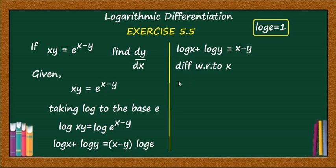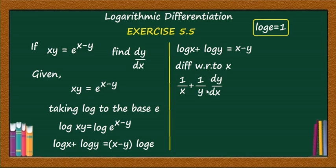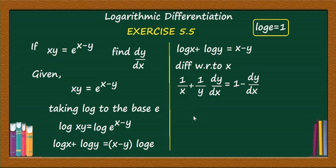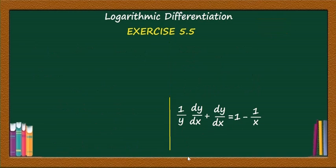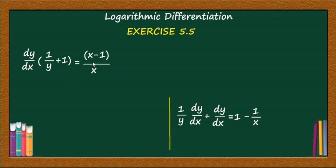Now differentiate with respect to x. The derivative of log x is 1/x. The derivative of log y with respect to x is (1/y)·dy/dx. So 1/x + (1/y)·dy/dx = 1 − dy/dx. Bringing dy/dx terms to the left: (1/y)·dy/dx + dy/dx = 1 − 1/x. Taking dy/dx common: dy/dx·(1/y + 1) = (x−1)/x.